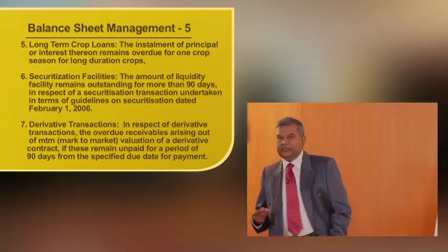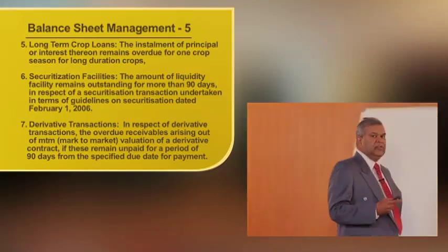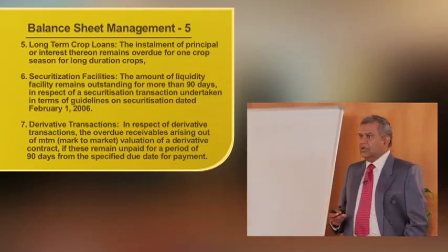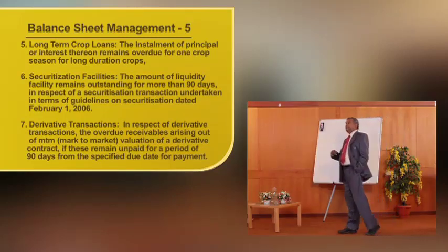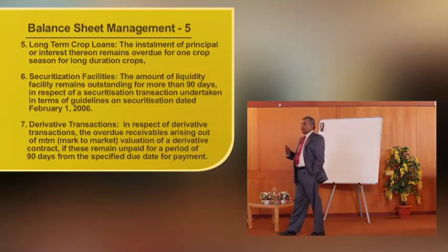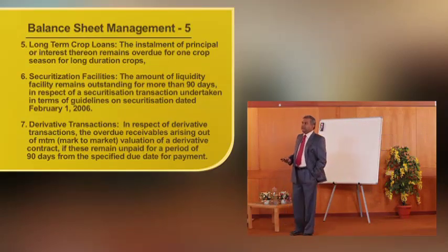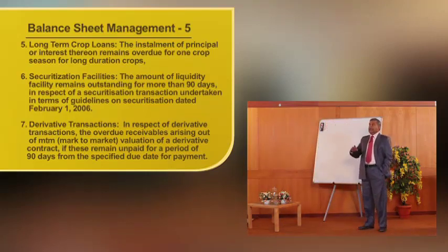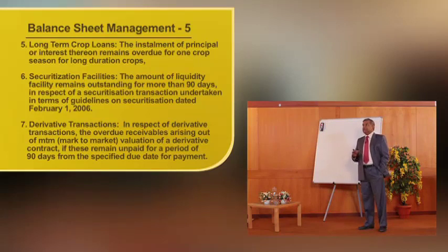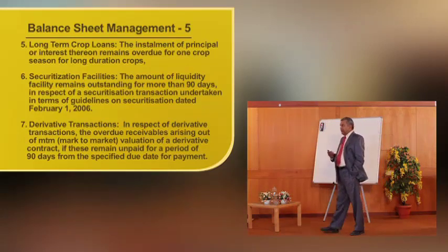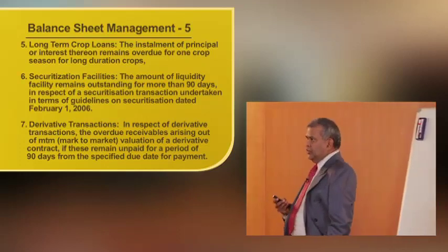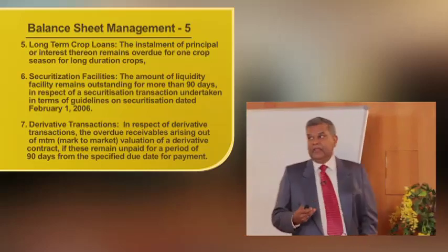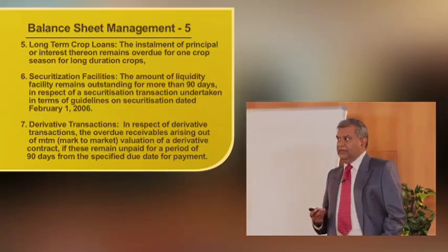Next is derivatives — instruments that derive their value from an underlying exposure, which can be an asset, a liability, or another derivative. In case of derivative transactions, the overdue receivables arising out of MTM (mark-to-market) valuation of the derivative, if these remain unpaid for a period of 90 days from the specified due date, the amount due to the bank becomes NPA in respect of those derivative transactions.